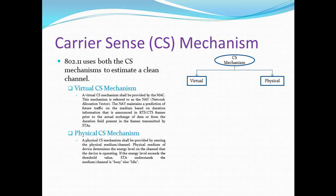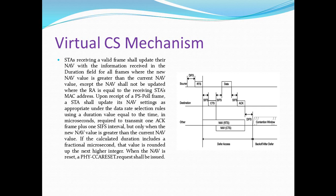The NAV also uses duration field information present in frames transmitted by stations. The physical carrier sense mechanism shall be provided by sensing the physical medium or channel. The physical medium of a device determines the energy level on the channel that the device is operating on. If the energy level exceeds the threshold value, the station understands that the medium is either busy or idle.